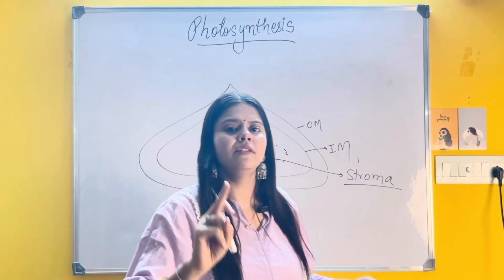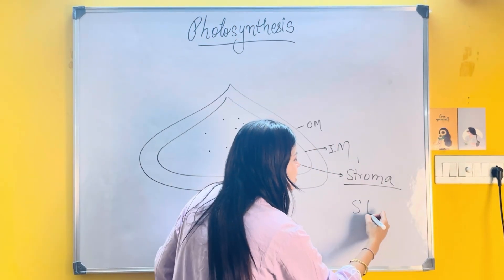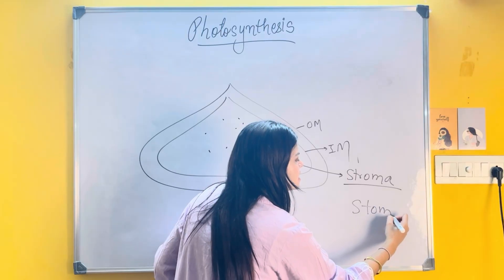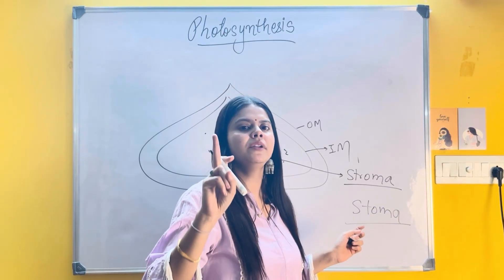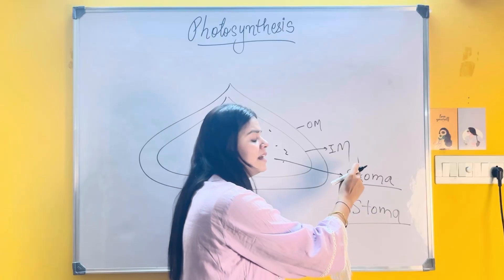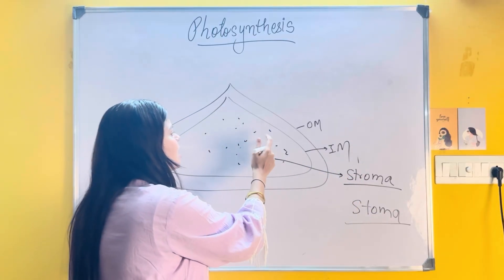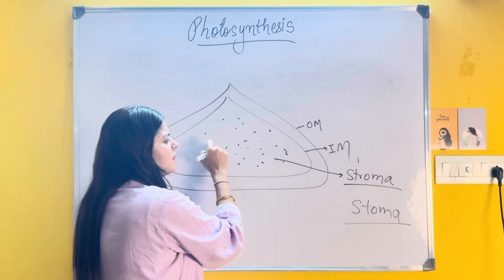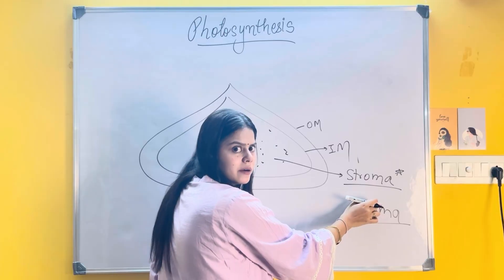Do not get confused with stoma, which is the singular form of stomata. They can ask you to write down the differentiation between stoma and stroma. So remember: the colorless ground matrix of chloroplast is called stroma.